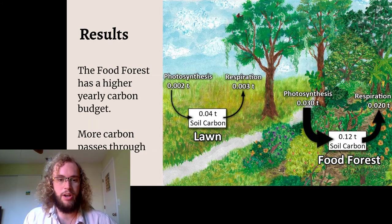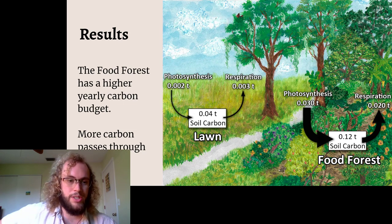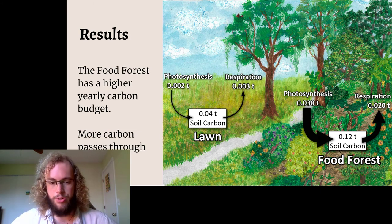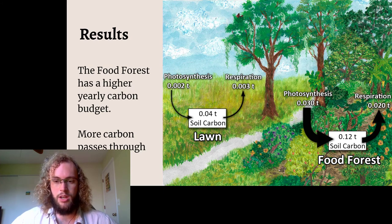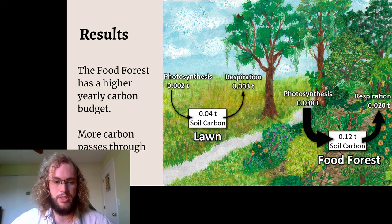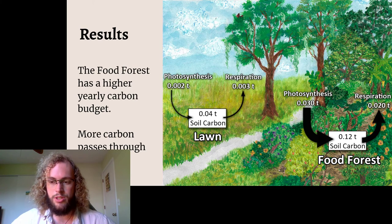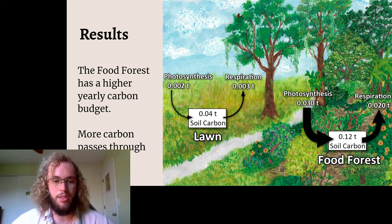My final hypothesis was that the food forest has a higher yearly carbon budget. My results show that this is indeed true. The food forest gathers about 15 times as much carbon through photosynthesis as does the lawn, and it also releases about seven times as much carbon through microbial respiration than does the lawn. The food forest uses more carbon every year than the lawn area, but it also stores more of that carbon every year than the lawn area does.